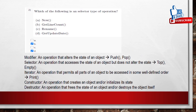Coming to the second question: which of the following is a selector type of operation? A selector accesses the state of the object but does not alter it. New alters the state. Get line count and get update date are used to give details — just the condition of the object. So get line count and get update date are the selector type of operations.